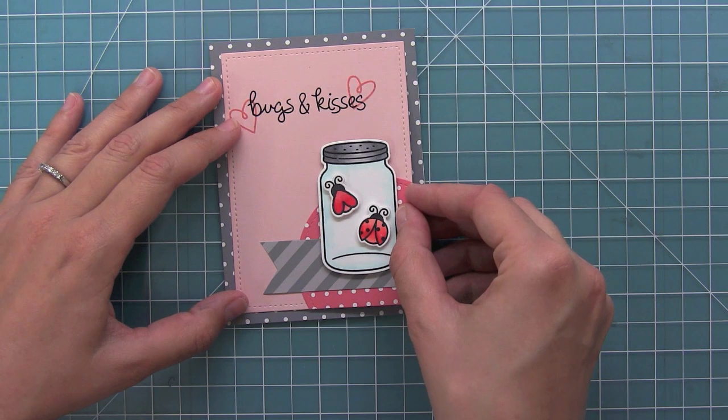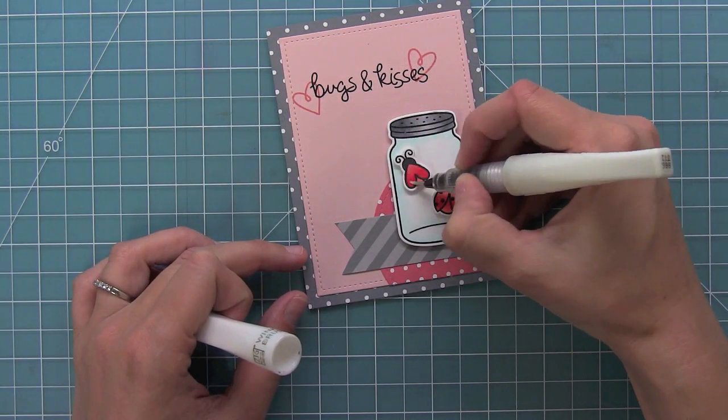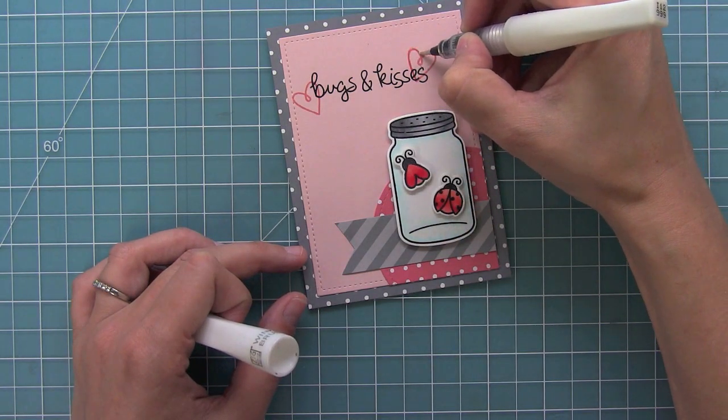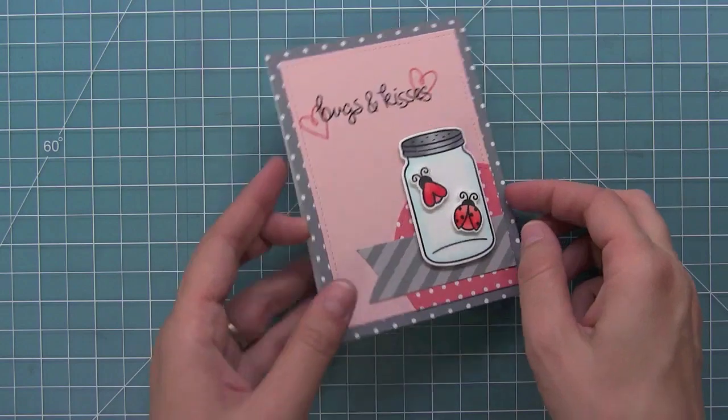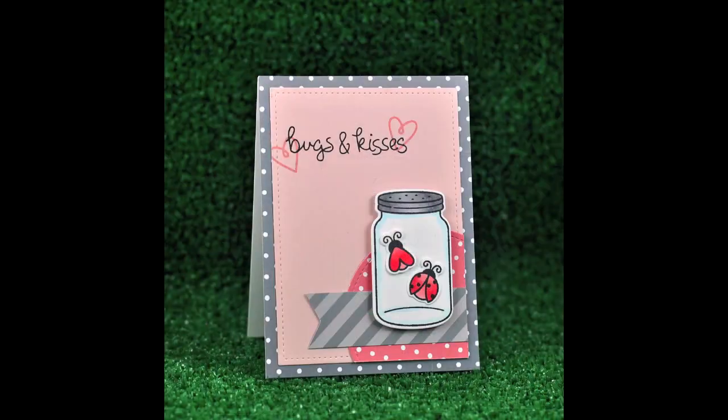And then now I can layer my whole panel on top, add some glitter to my little bugs there and then also to the hearts around the bugs and kisses and this card is done. I love this card because it's really easy to replicate so you can make a ton of valentines with this.